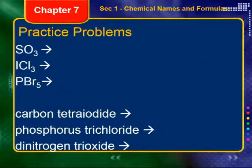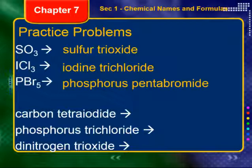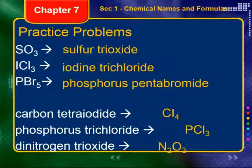Let's look at some practice. For the first three, write the names: sulfur trioxide, iodine trichloride, phosphorus pentabromide. For the formulas: carbon with four iodines is CI4; phosphorus with three chlorines is PCl3; two nitrogens and three oxygens is N2O3.